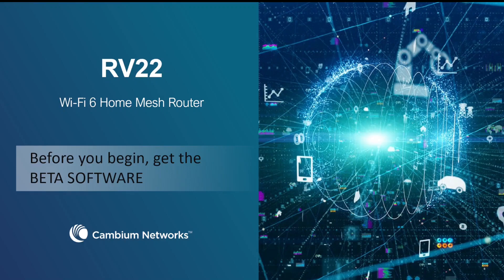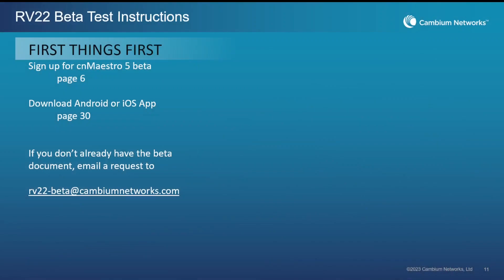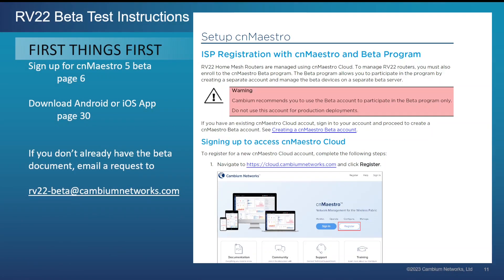Before you test the RV22, make sure you first set up all the software. You're going to have to get access to the beta software — this is going to be the CN Maestro in the cloud, and it's also going to be the subscriber app. You'll find the links to that beta software and instructions in the documentation that was sent with your access point.